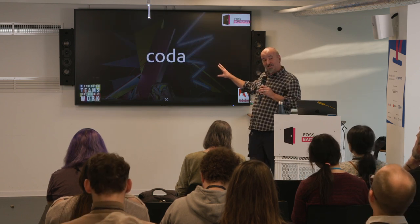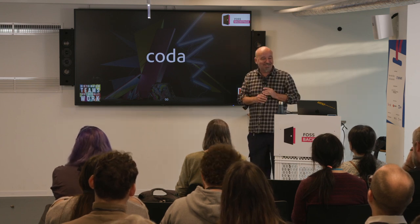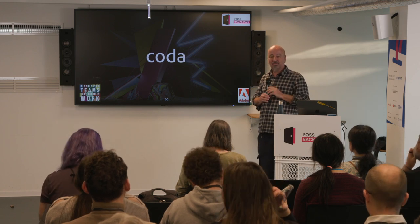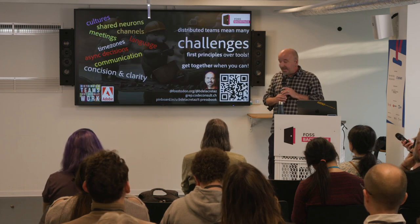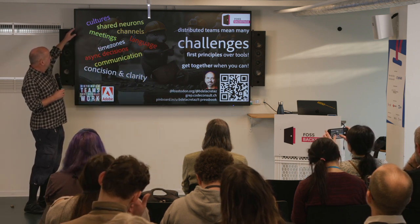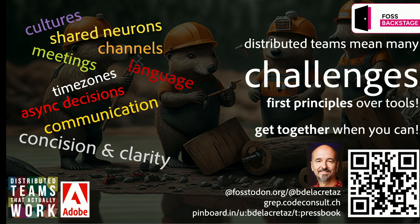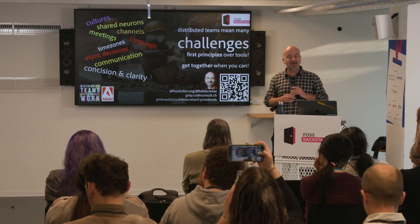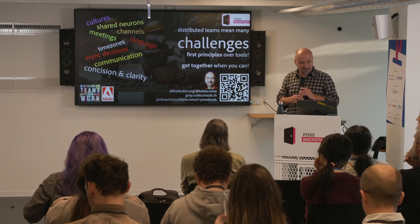This was a bit fast — last time I did this talk it was 45 minutes, so I had to condense it. My conclusion is that all these things tend to get in the way of a distributed team: cultures, difficulty of sharing neurons to reflect on the same ideas, which channel to use, meetings being hard, language and time zones. Asynchronous decisions can help a lot. Written communication is hard but can make a big difference with concision and clarity. I have a personal blog and a list of links on Pinboard with a 'collaboration' tag where you can find lots of related material.